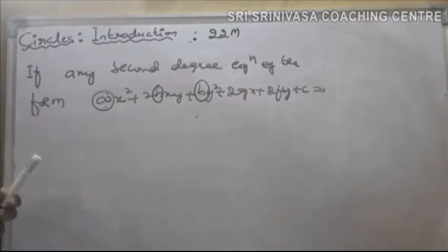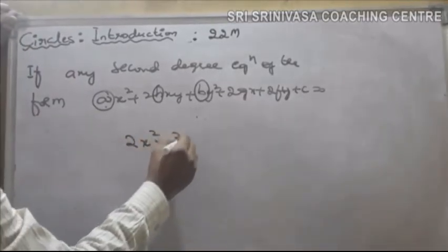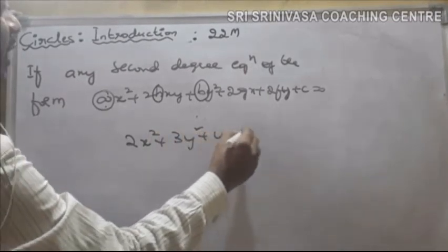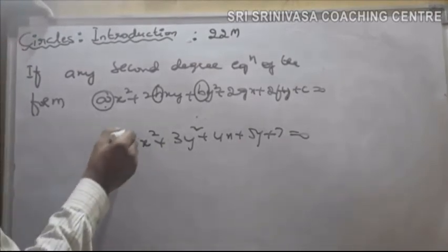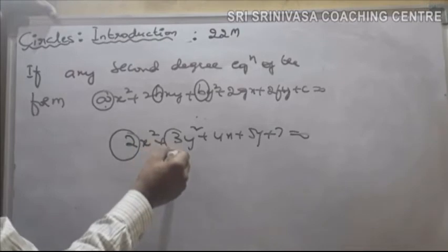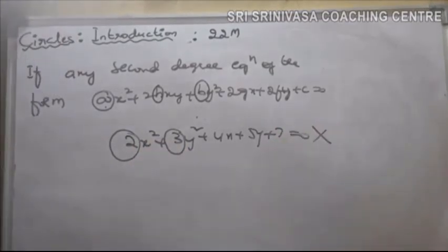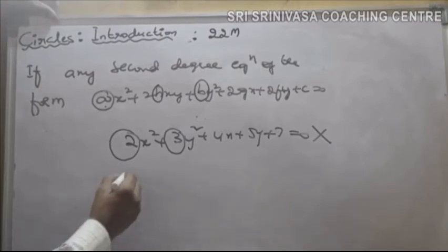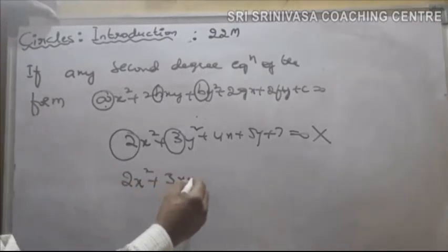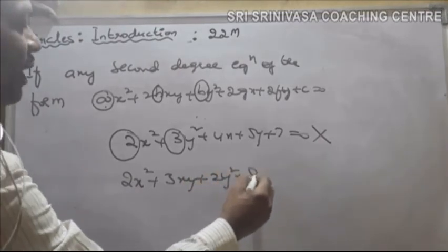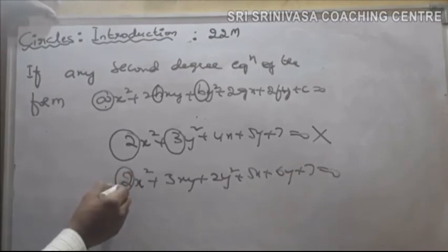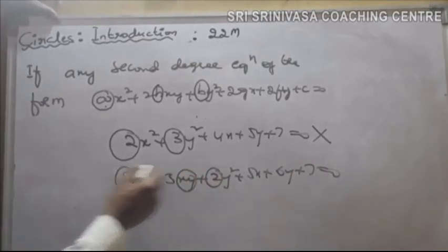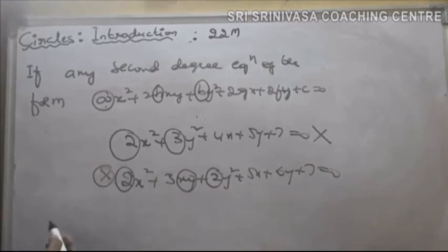Suppose if I say 2x square plus 3y square plus 4x plus 5y plus 7 equals 0 — this is a second degree equation, but the coefficient of x square is 2 and the coefficient of y square is 3. So this is not the equation of a circle; it is simply a curve. Similarly, 2x square plus 3xy plus 2y square plus 5x plus 6y plus 7 equals 0 — even though the coefficient of x square equals the coefficient of y square, an xy term is present, so this is not the equation of a circle; it represents a curve.